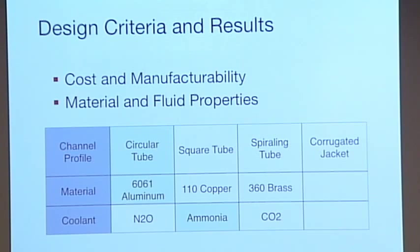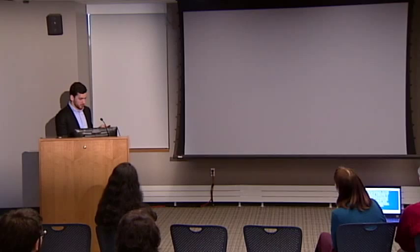Then for the material, there were three that we considered. All three of these work, but aluminum is the cheapest, so we use that one. And then for the coolant, we started with N2O, which is what BURPG wanted, but we found that it doesn't work because it gets too hot. So then we went into ammonia, which they also use. So yeah, we used ammonia.